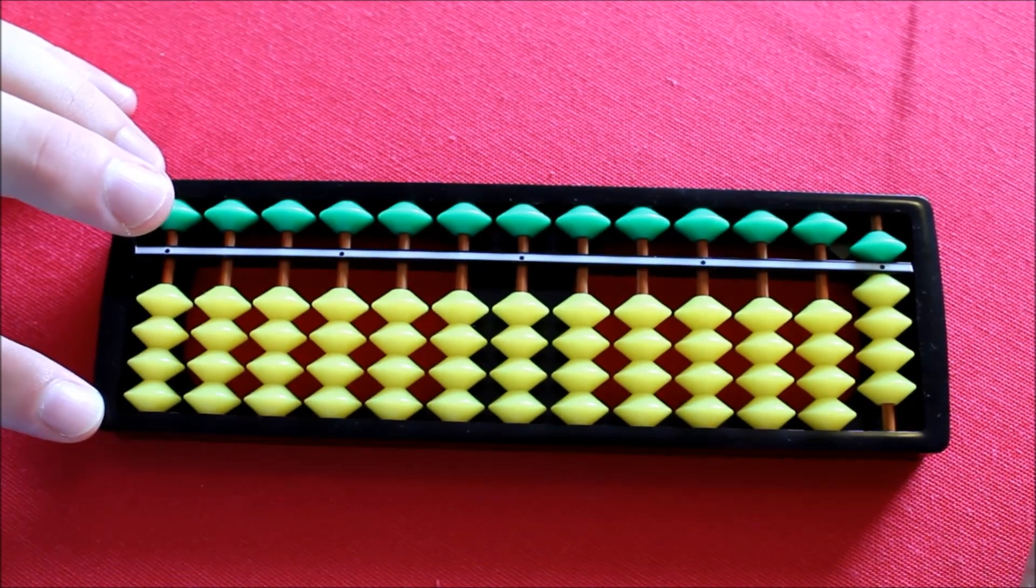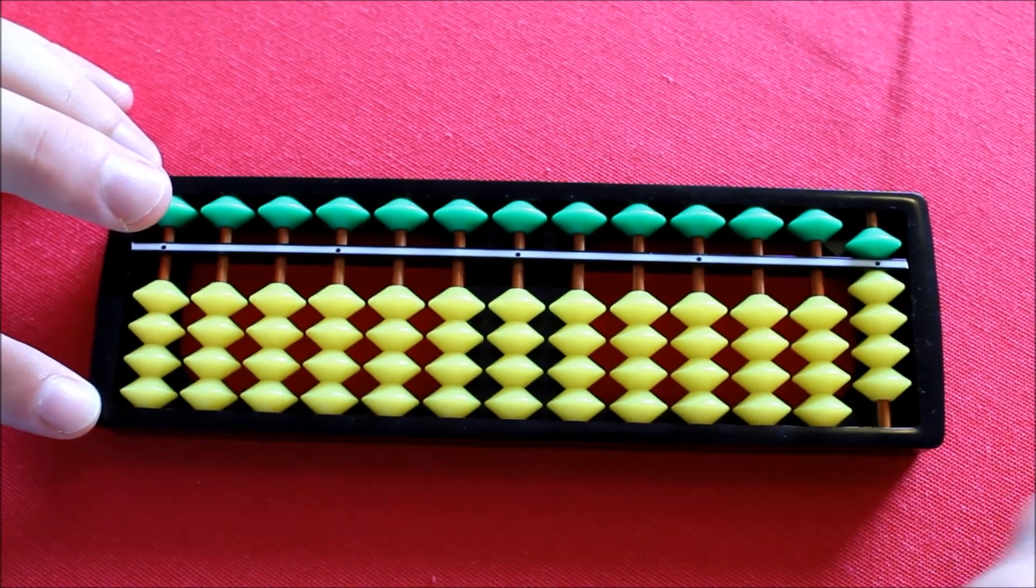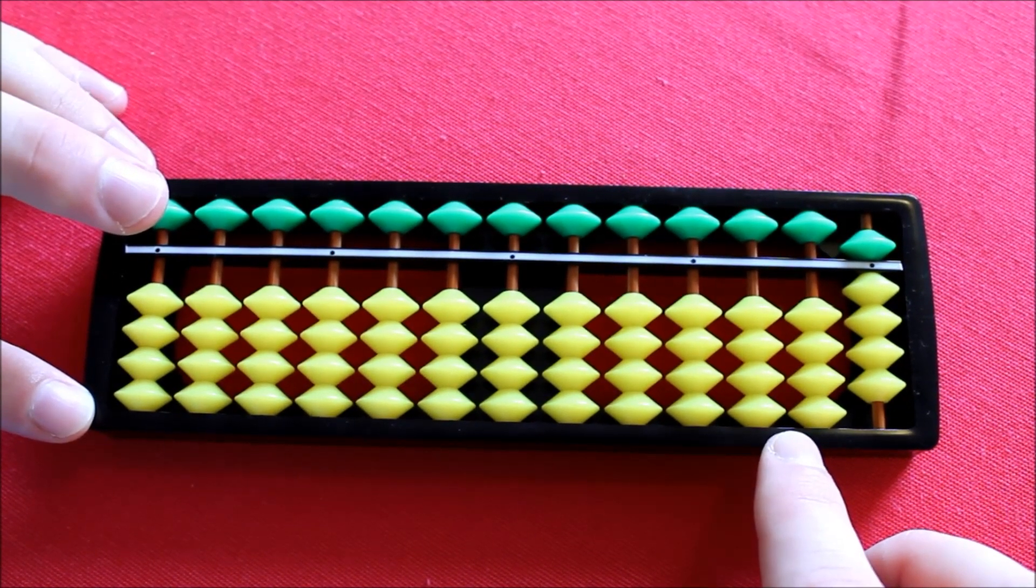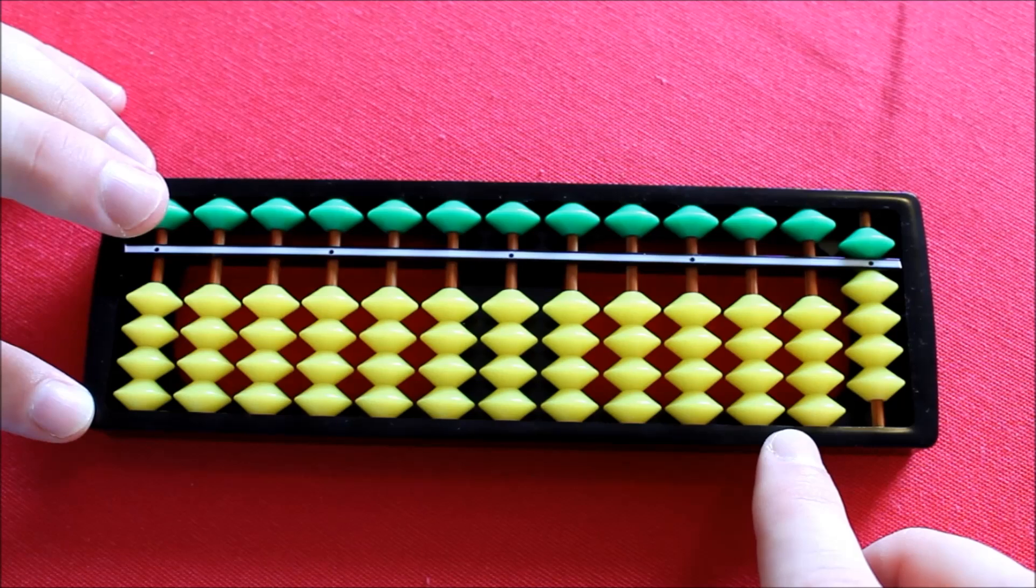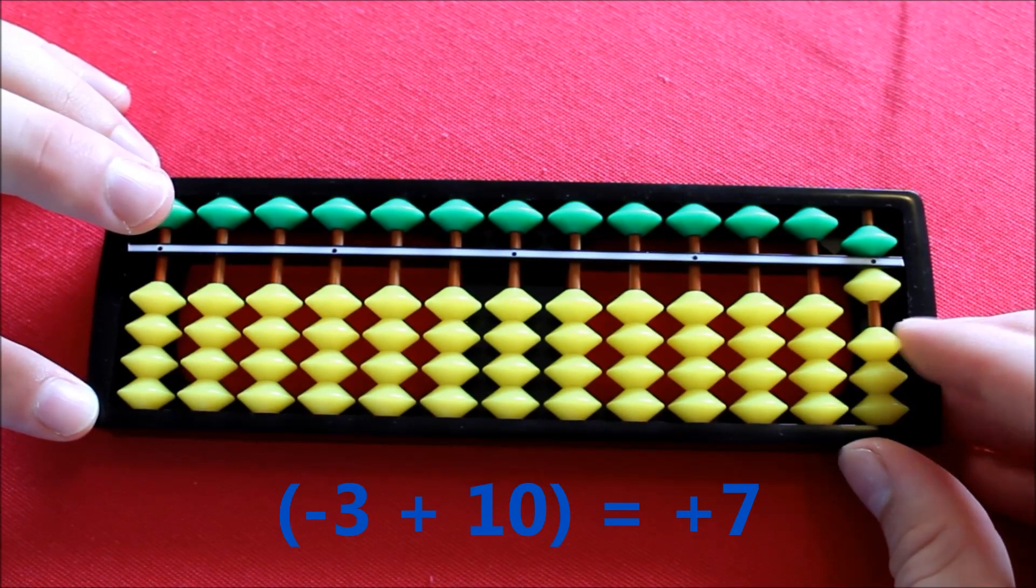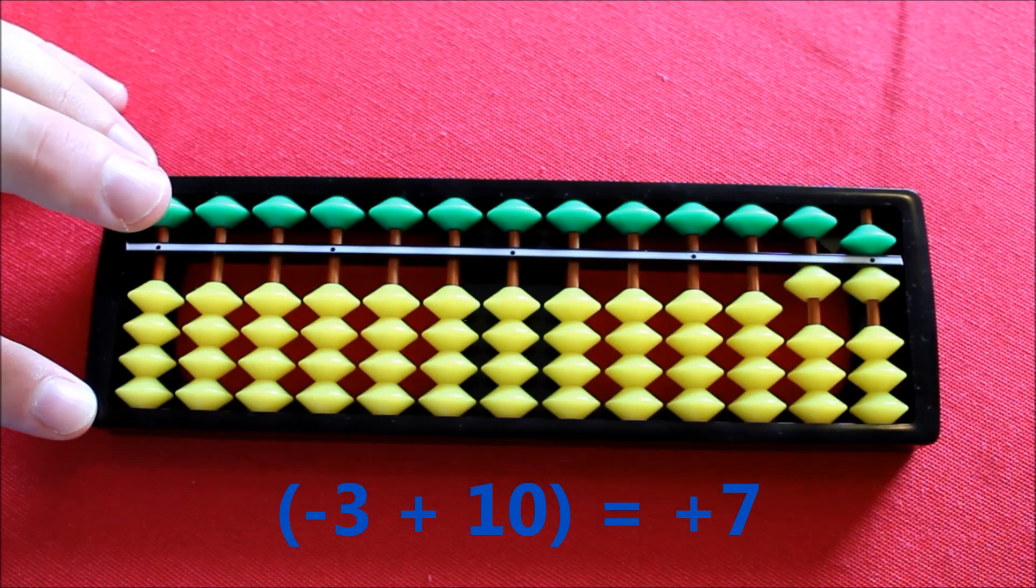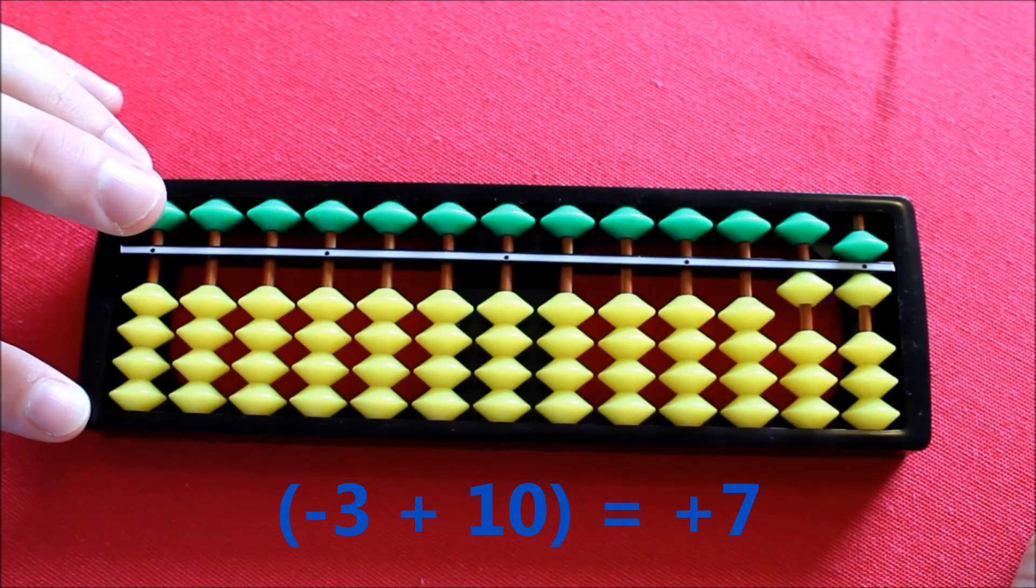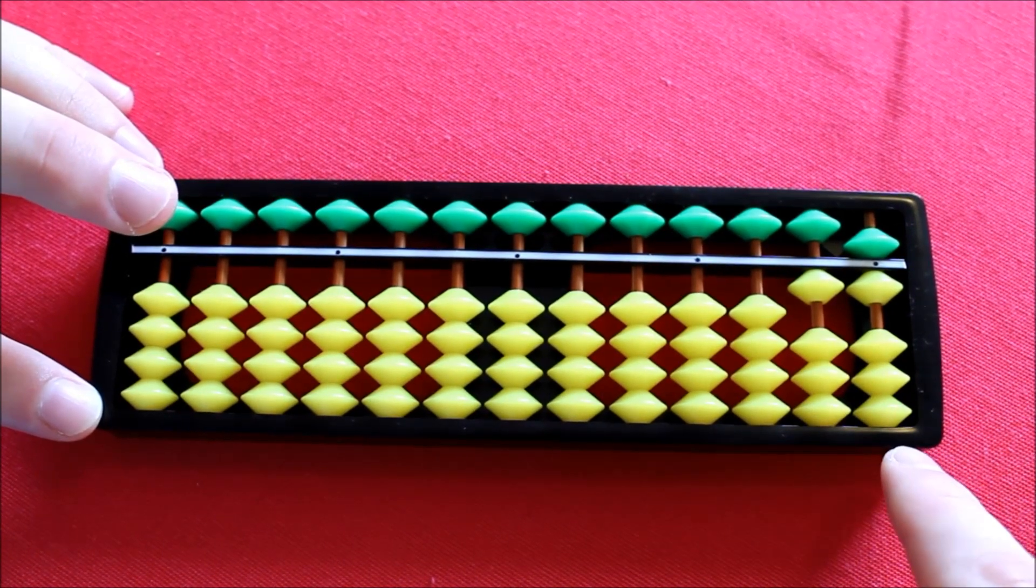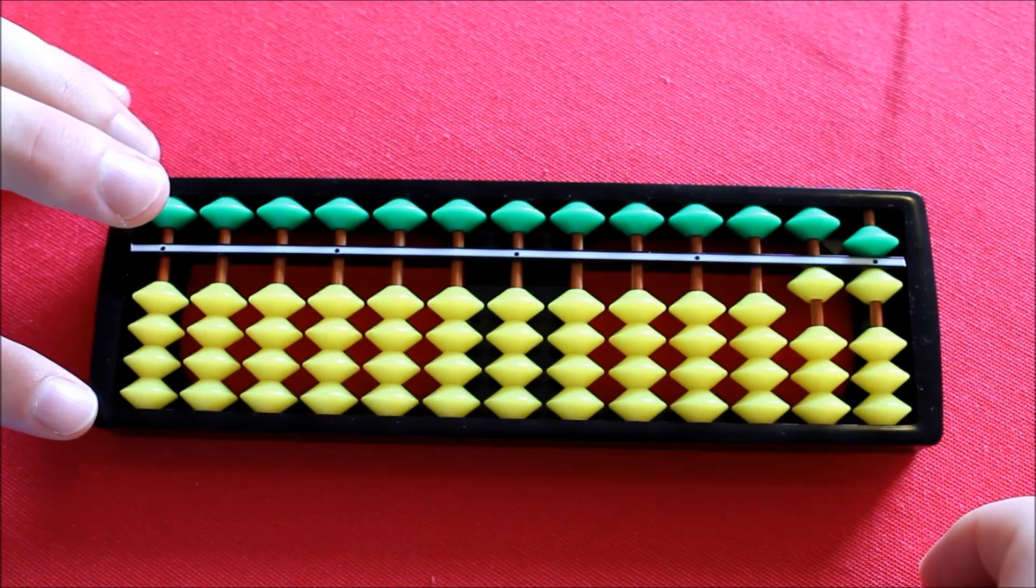Now to add 7 further to 9, once again, we're going to have to add 1 into the next column. Adding a 10 means that we're adding 3 more than the 7 we wish to add. So firstly, subtract 3, then add 10 for a net result of having added by 7. And what have we got left on the Soroban? 1 here, 6 here. 7 plus 9 equals 16.